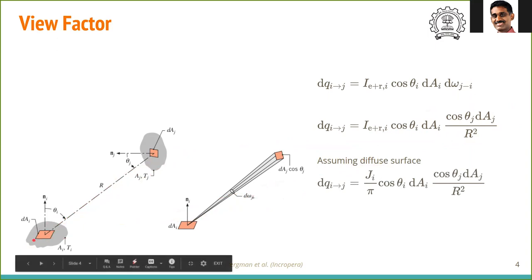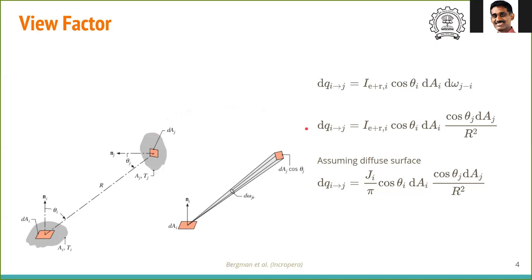Assuming that all surfaces are diffuse, the view factor is defined only when surfaces can be assumed to be diffuse. If it is diffuse, then the intensity I_i is not a function of theta. Therefore, when you integrate it, it simply equals J_i divided by pi, or equivalently I equals J divided by pi. So in the diffuse case, this term can be written as J_i divided by pi.